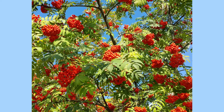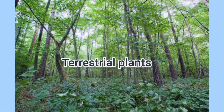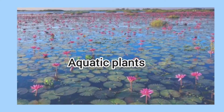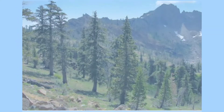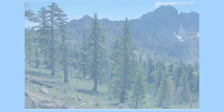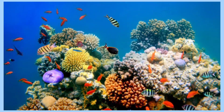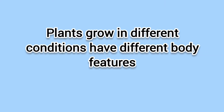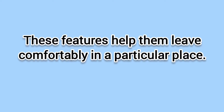Earth is surrounded by different kinds of plants. We can see some plants grow on land and some grow in water. Some grow on plain areas and some grow on hills and mountains. Some grow on the surface of water and some grow deep inside water. Plants growing in different conditions have different body features. These features help them live comfortably in a particular place. The body features and habits that help a living thing live in its natural surroundings are called adaptation.